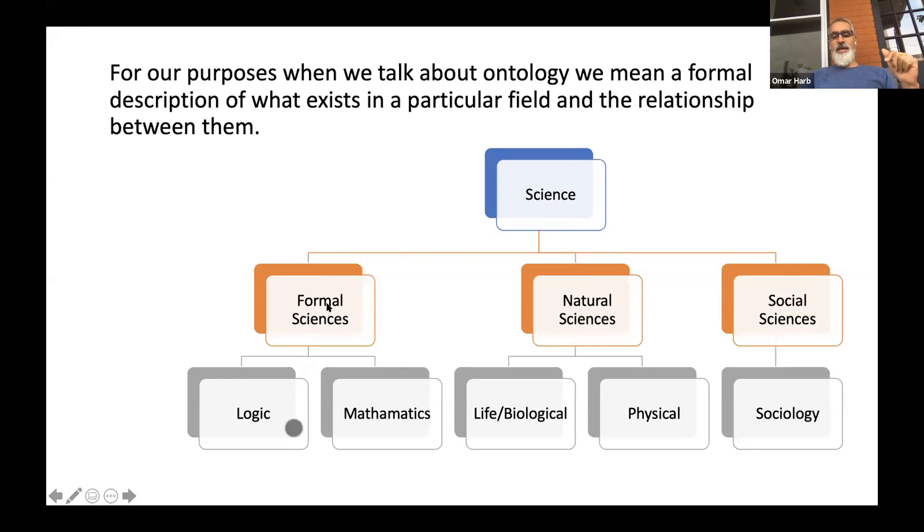And then each one of these can be broken up. Formal science can be logic and mathematics, natural sciences can be life and biological sciences or physical sciences, social sciences can be sociology. And there can be connections between these and linkages between them. This is the formal description of science, and each one of these will subcategorize into hundreds of subcategories.